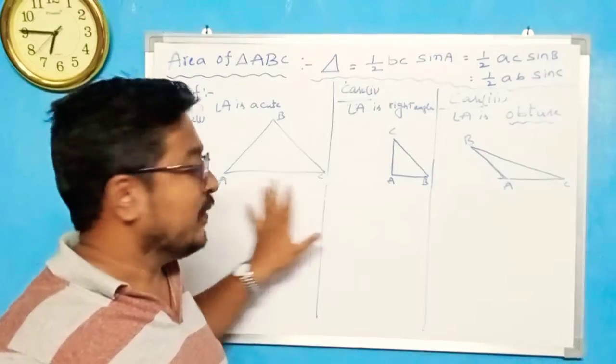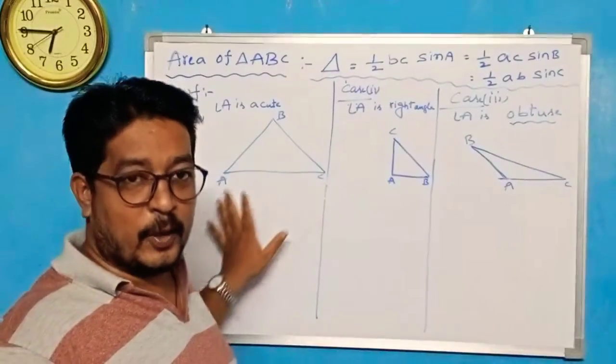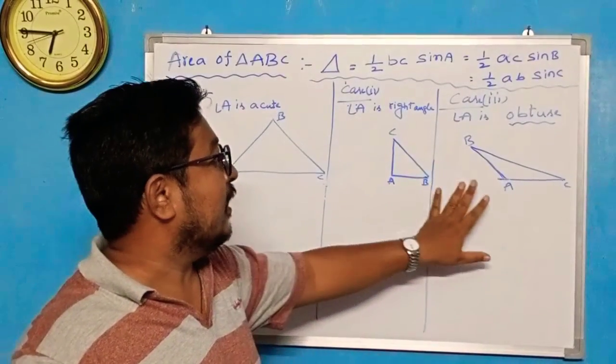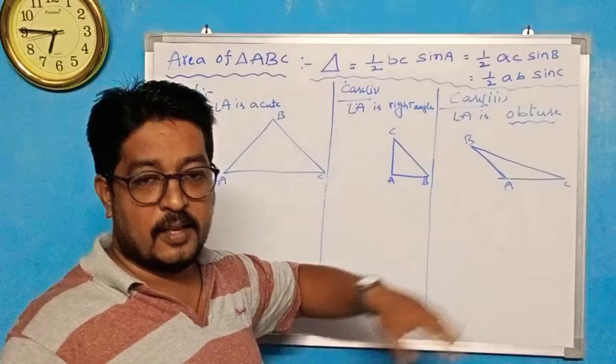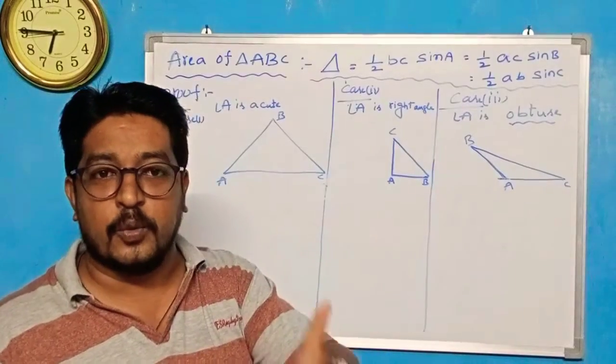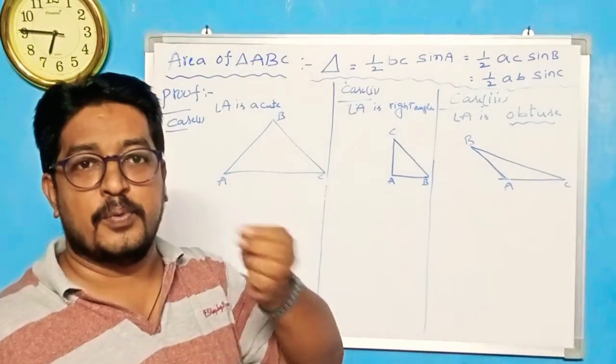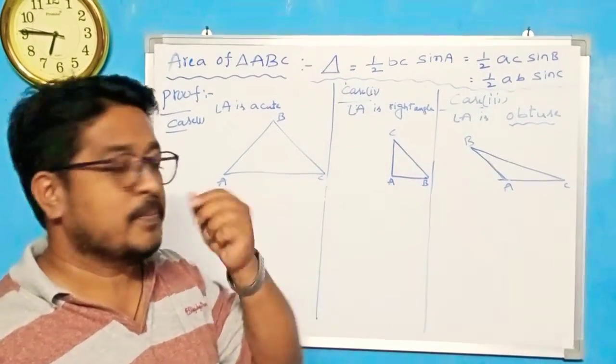Case 1, case 2, case 3 — acute angle, right angle, and obtuse angle. Before going to the proof, I can give some simple steps.